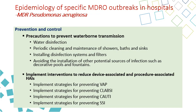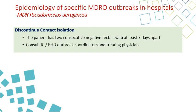Additional preventive measures target specific infections caused by Pseudomonas aeruginosa, including the VAP, CLABSI, and SSI bundles. Contact isolation for Pseudomonas aeruginosa patients can be discontinued upon obtaining two consecutive negative rectal swabs at least one week apart.